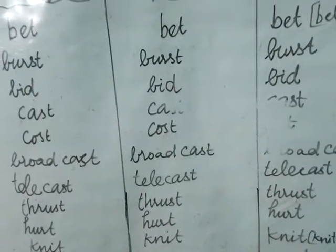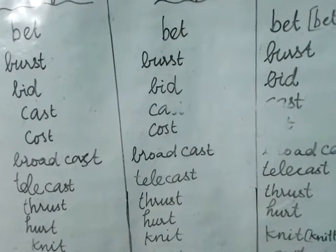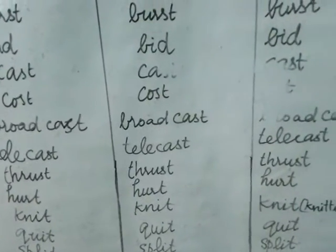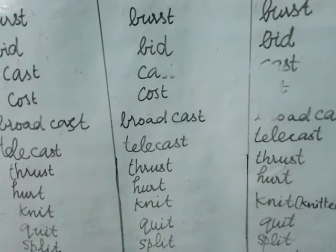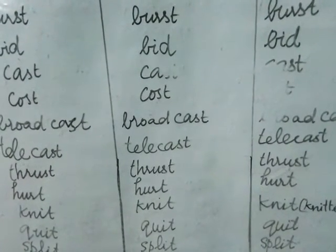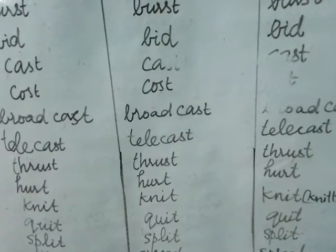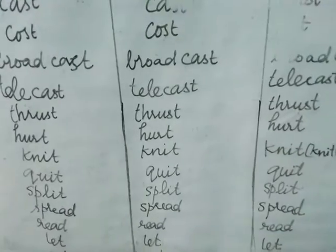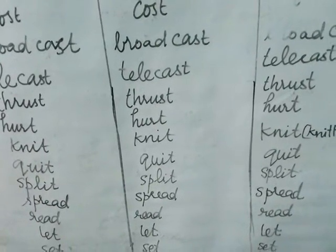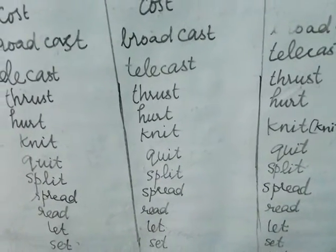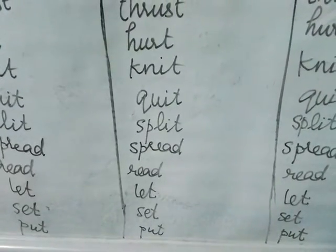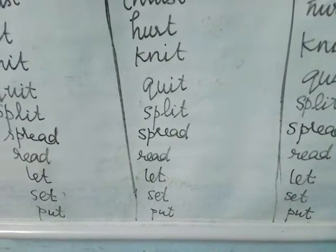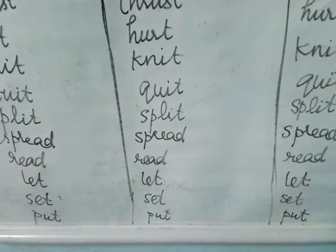Continuing with Type 1 verbs: cast, cast, cast; broadcast, broadcast, broadcast; telecast, telecast, telecast; trust, trust, trust; hurt, hurt, hurt; knit, knit, knit; quit, quit, quit; split, split, split; spread, spread, spread; read, read, read; let, let, let; set, set, set; put, put, put.